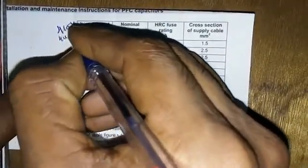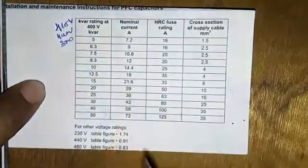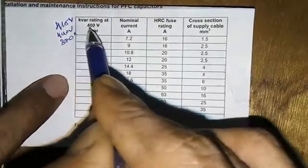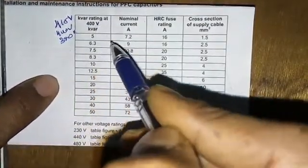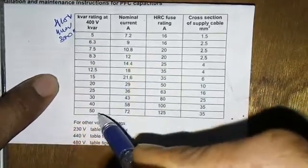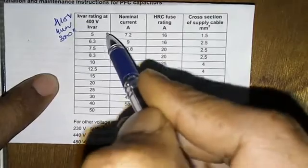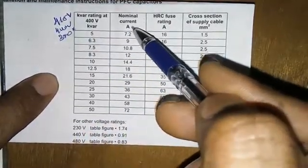Here I'm showing some tables for choosing the fuse link based on the kVAR and the cross section of the cable or wire. You can see here the voltage range of the capacitor - 440 volts or 400 volts, 14 volts, whatever it is, it's not a problem. You can choose based on kVAR.